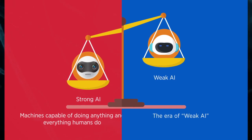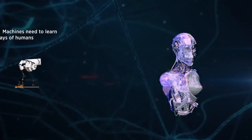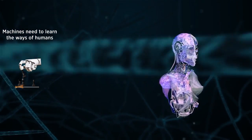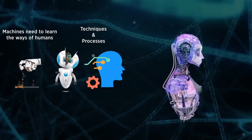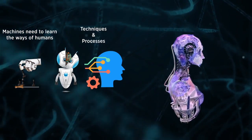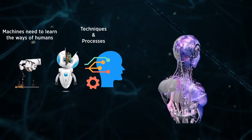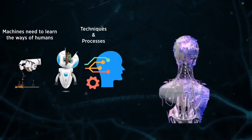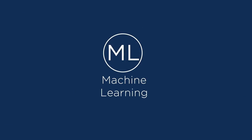To transition from weak AI to strong AI, machines need to learn the ways of humans. The techniques and processes which help machines in this endeavor are broadly categorized under machine learning.